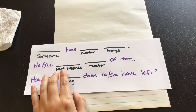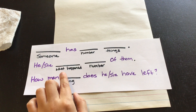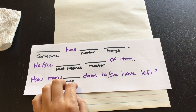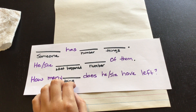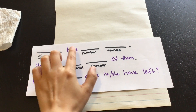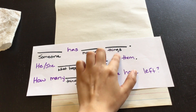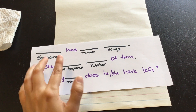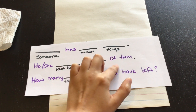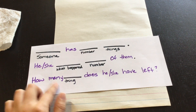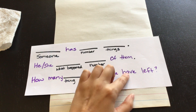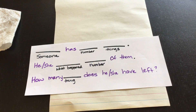For subtraction, our sentence frame looks like this: 'Someone has [number] things. He or she [what happened] [number] of them. How many things does she or he have left?'